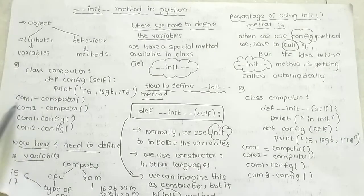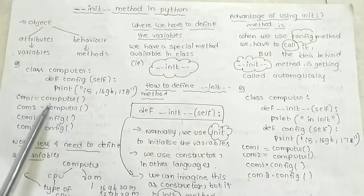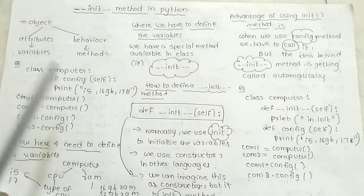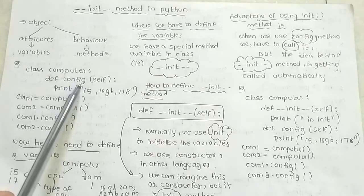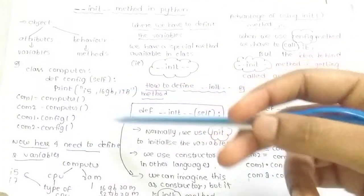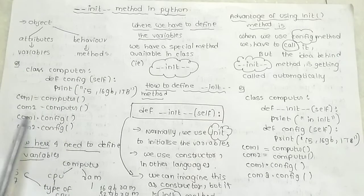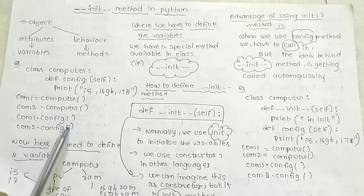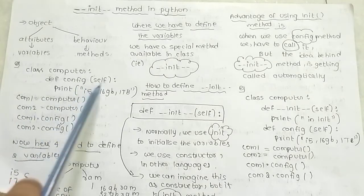I will pick this method from the computer. This object is the computer class, which we will mention here. So if we have objects, we will call this object, we will define this method, we will call this method.